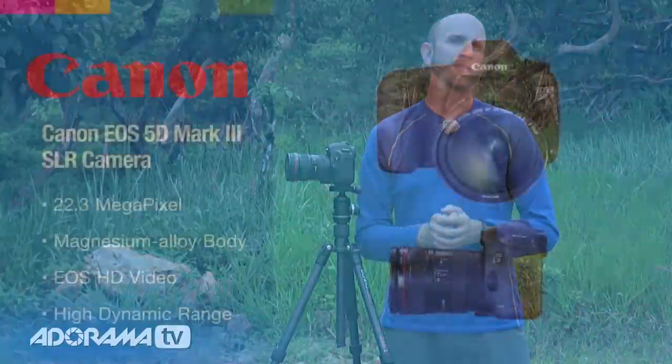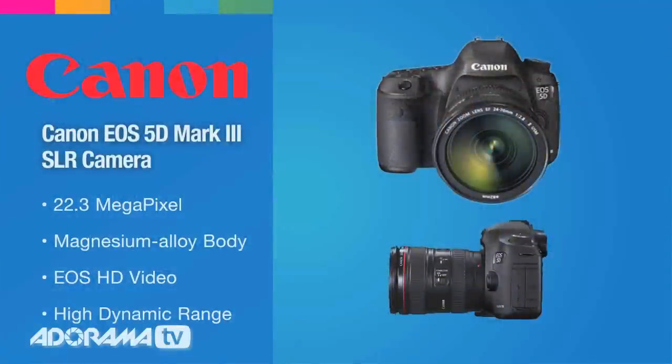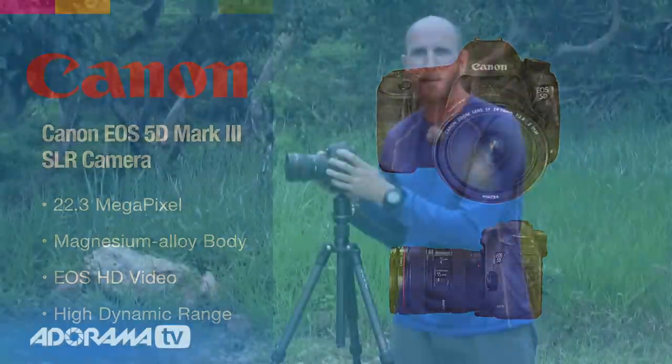In some cameras you can set the drive mode to single, to allow you to take each of the shots individually using a separate shutter press for each shot. It's important to understand that auto exposure bracketing works differently in different modes — this is why my friend was having issues when using auto exposure bracketing in shutter priority mode.